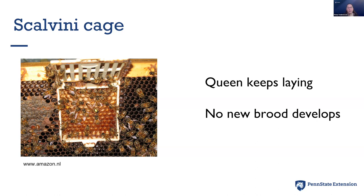One of these cages is called a Scalvini cage. The queen gets trapped in this little box with comb at the back, and she's able to lay eggs, but that brood can never be capped because the cage is too shallow. It keeps the queen laying, keeps the colony happy, keeps her pheromones going, but it doesn't allow any brood — so it becomes a true brood break.